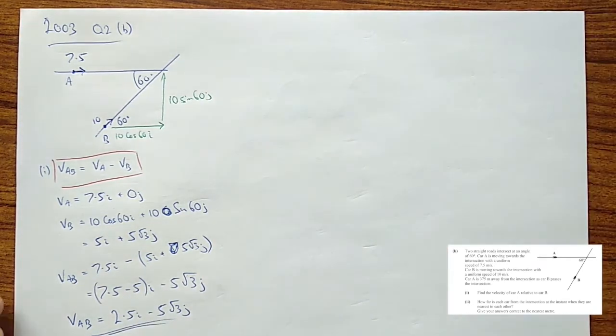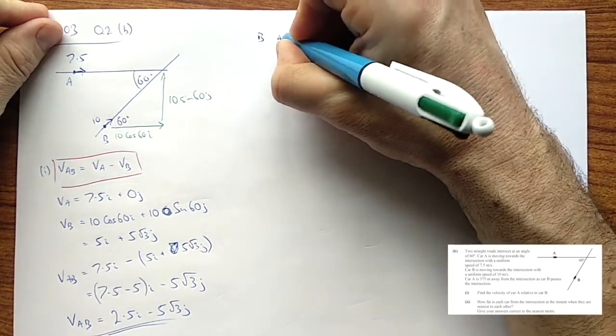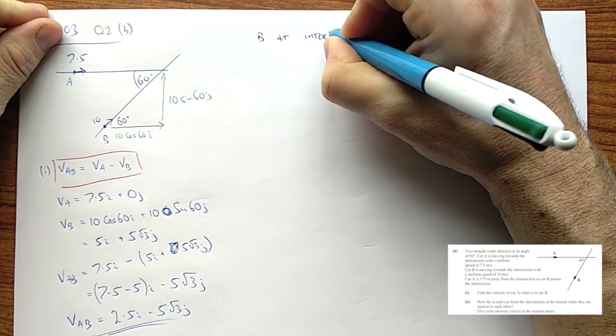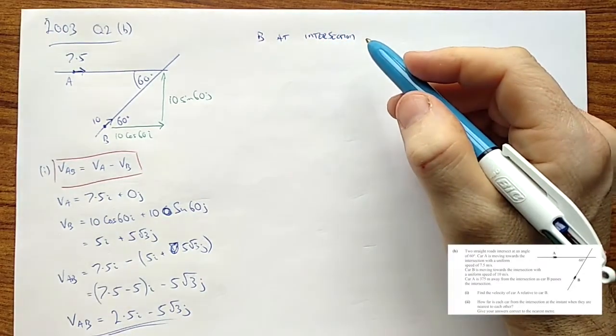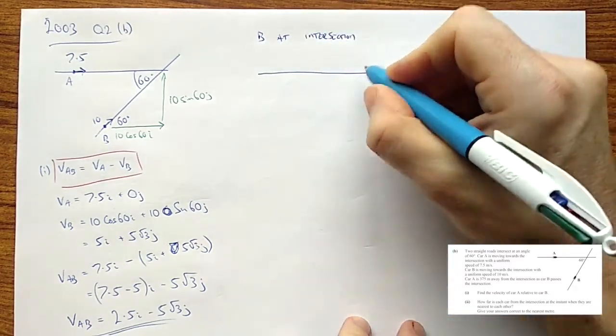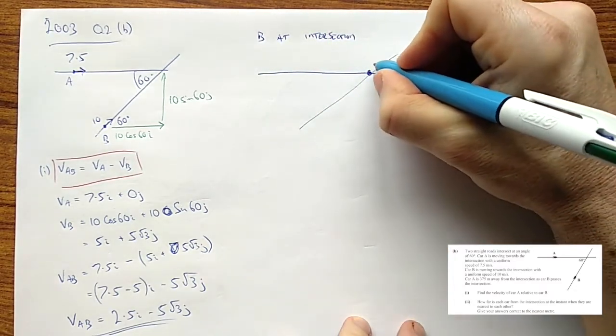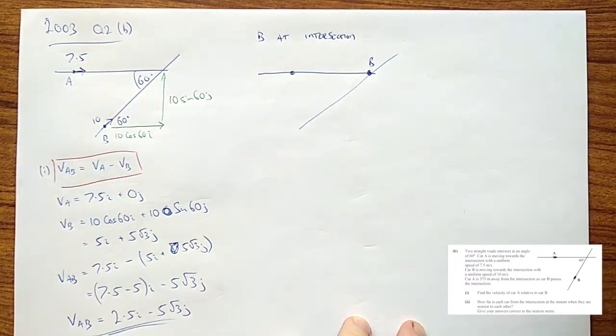Now, part 2. How far are they from the intersection at the instant they're nearest to each other? Okay, so, let's put B at the intersection. Two reasons for B at the intersection. One is because they told us it's at the intersection. So, at this little point here. There is our roads. B is at the intersection. And A is 375 away from it.